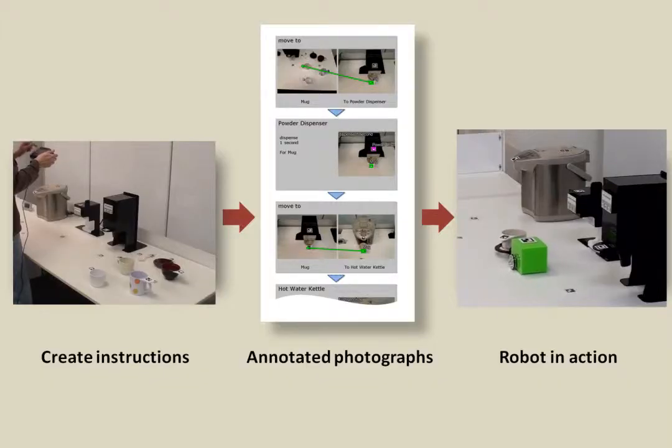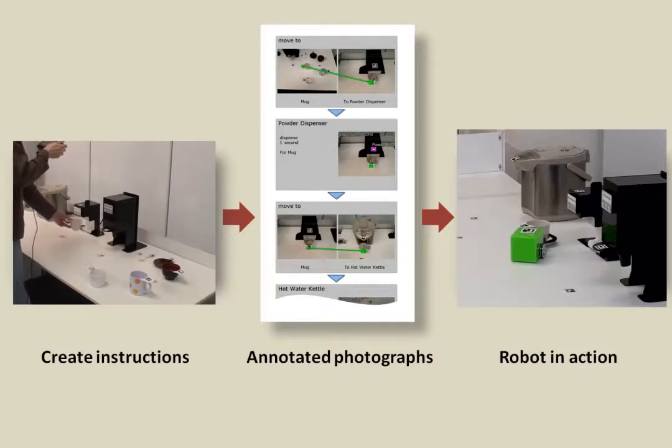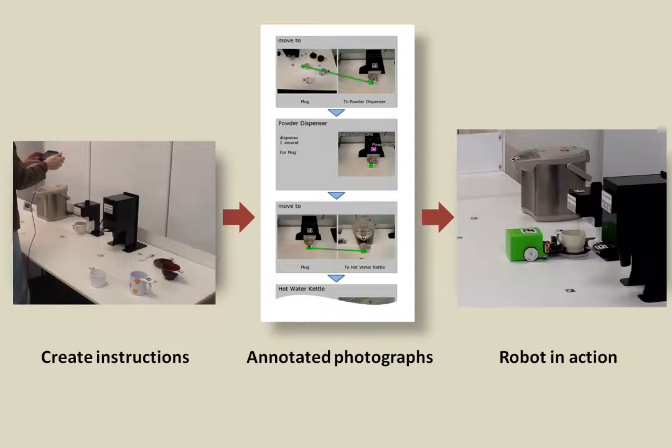In this video, we propose a method of instructing a sequential task to a household robot using annotated photographs. Annotated photographs are created using a handheld touchscreen device. They give explicit instructions to a household robot.